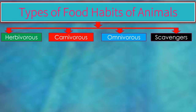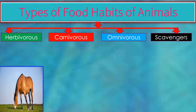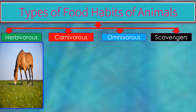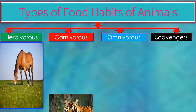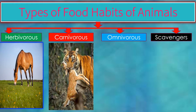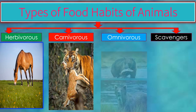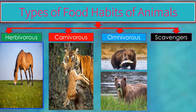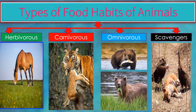Animals are categorized into four different types depending upon their food eating habits. The first one is herbivorous. The second one is carnivorous. The third one is omnivorous. And the last one is scavengers. Let us see all these types of animals in detail.